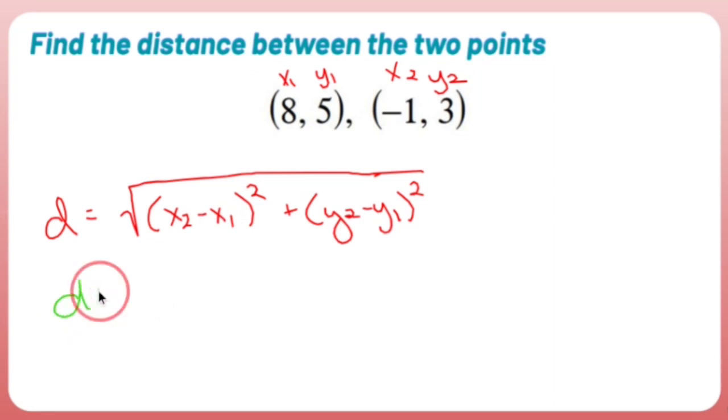So d is going to equal a big square root. Inside the first parentheses, I have x sub 2, which I called negative 1, minus x sub 1, which I called 8. Square that. Plus y sub 2, which is 3, minus y sub 1, which is 5. Square that.